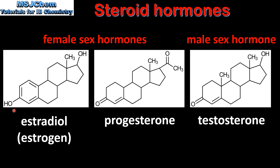The sex hormones differ in the functional groups that are attached to the steroidal backbone. For example, estrogen has 2 hydroxyl groups and a benzene ring. Progesterone has 2 ketone groups and an alkenyl group, which is a carbon to carbon double bond. And testosterone has a ketone group, a hydroxyl group, and an alkenyl group.